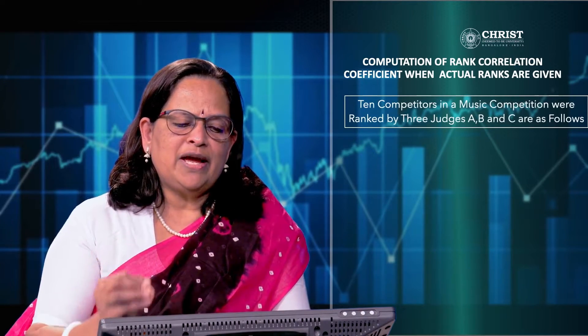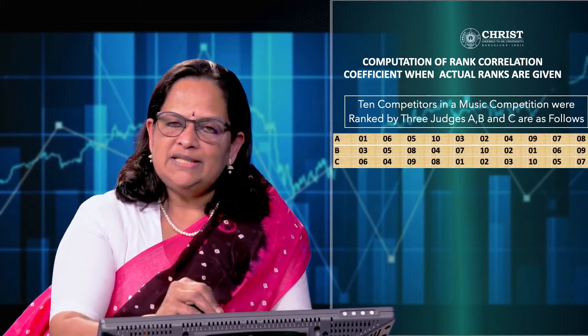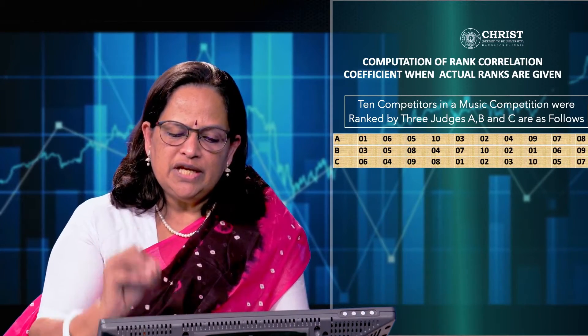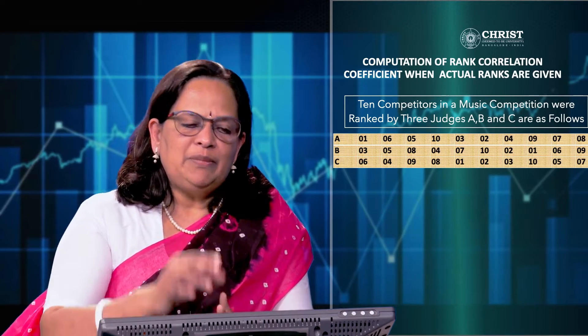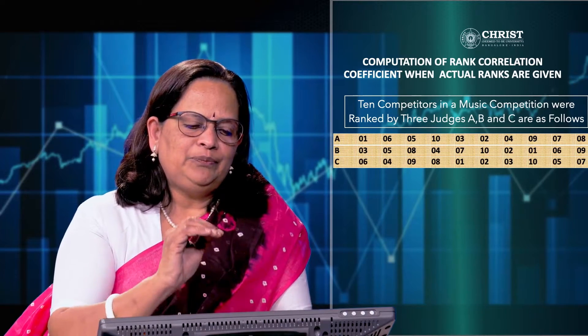The second problem has three sets of values: 10 competitors in a music competition were ranked by 3 judges A, B, and C. Using rank correlation, find out which pair of judges have the nearest approach to common taste in music. The ranks given by A are denoted as R1, B as R2, and C as R3. So we have to find the rank correlation between R1 & R2, R2 & R3, and R1 & R3 — three computations in total.